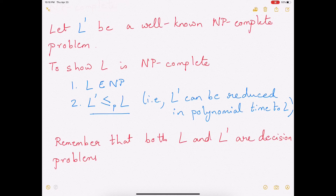It is important to make sure that you are reducing L prime to L and not the other way around. Finally, remember that both L and L prime are decision problems and not optimization problems. In the next video, we'll look at a concrete example of how to prove NP-completeness, where we'll apply these rules. Thank you for watching.